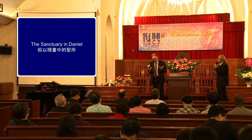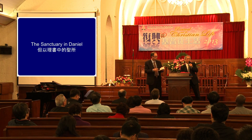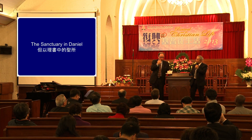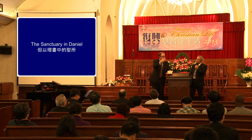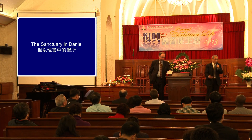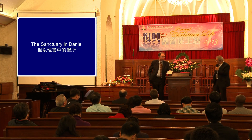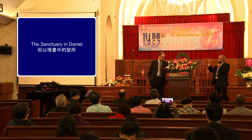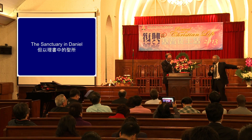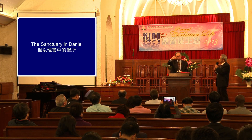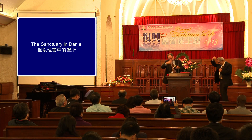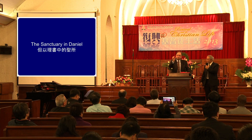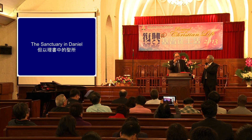In chapter 8, we have another sequence: the ram and the goat. The ram representing Medo-Persia and the goat representing Greece. Then a little horn representing Rome and the papacy, and a very important statement about the purification of the sanctuary.